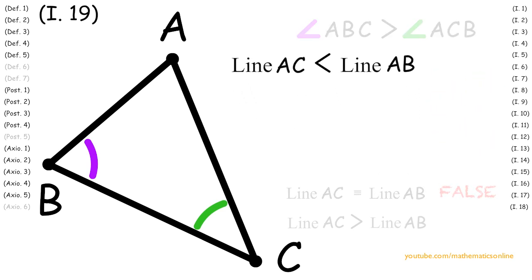Next, let's assume that line AC is less than line AB. Since line AC and line AB are two sides of a triangle, then by Proposition 18, angle ACB is greater than angle ABC.